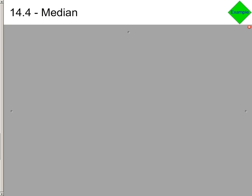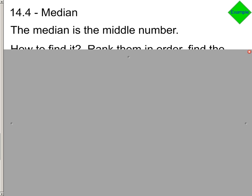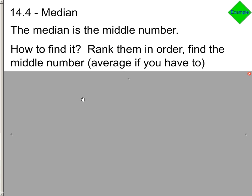How do we find the median? The median is the middle number. Rearrange your numbers and put them in order from smallest to greatest, and find the middle number. If you need to, average it.